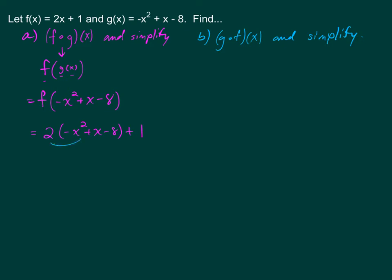All you have to do is distribute this 2 and combine any like terms. So this is going to be negative 2x squared plus 2x. And here we've got 2 times negative 8 is negative 16, plus 1 more will give you a negative 15. And this is the answer — that can't be simplified further. Simplification could include factoring, and this polynomial cannot be factored.